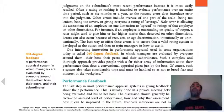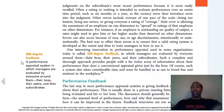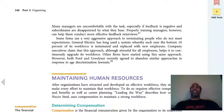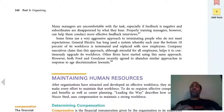360-degree feedback — sometimes performance evaluations get information from your manager, from someone who reports to you, from someone in a different department, all different areas. It's a performance appraisal system in which managers are evaluated by everyone around them — their boss, their peers, and their subordinates. At a company I worked at, they had employees review managers, and the managers got upset about it and never did the process again because they didn't like what the employees said about them.